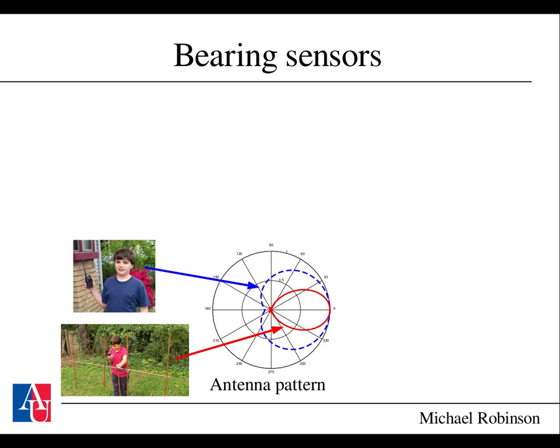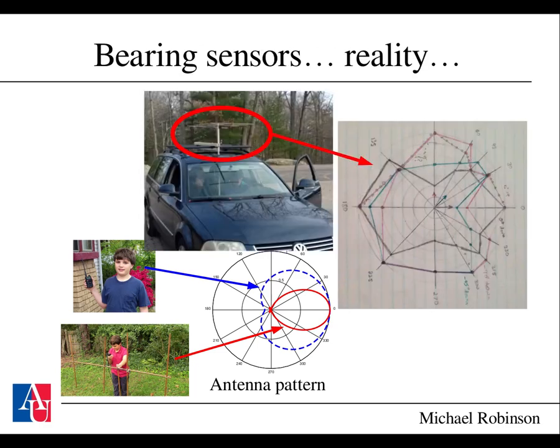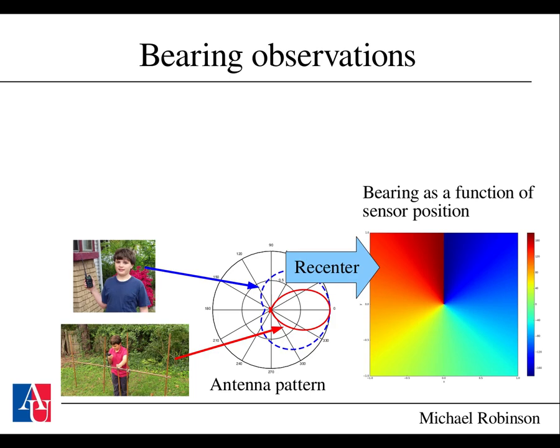Let's consider the case of bearing sensors. A given bearing sensor has the ability to identify which direction signals are coming from — it does so by breaking an azimuthal symmetry. Even though you might have a symmetric antenna, amateur radio operators know that if you place the antenna near your body, you can break symmetry and identify the signal direction. You could also use a directional antenna like the one shown at the bottom here. There is a difference between theoretical antenna patterns and reality, but from the mathematics of sheaves it turns out it doesn't matter — you can use either the simulated version or, for higher fidelity, the measurement data. In either case, you end up with bearing as a function of sensor position.